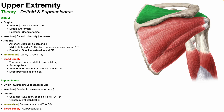The innervation of the supraspinatus is the suprascapular nerve, which also receives innervation from the brachial plexus via nerve roots C5 and C6. Its blood supply is via the suprascapular artery.